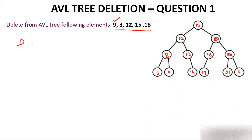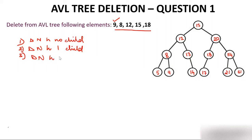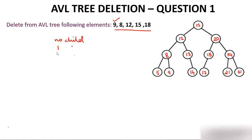First, we have to delete 9. Deletion has three cases: first case is delete a node having no child, second case is delete a node having one child, and third case is delete a node having two children. I request you, if you don't know these cases, kindly watch the video on BST deletion. Otherwise I will explain these conditions in this video as well.